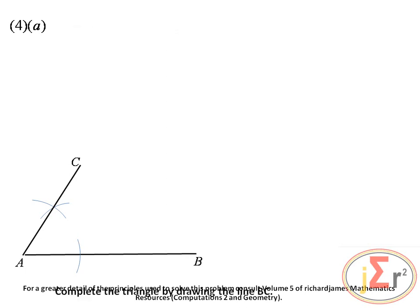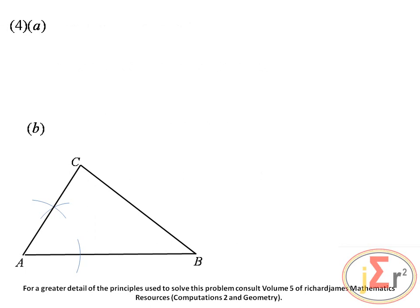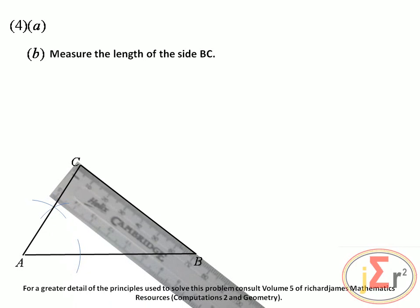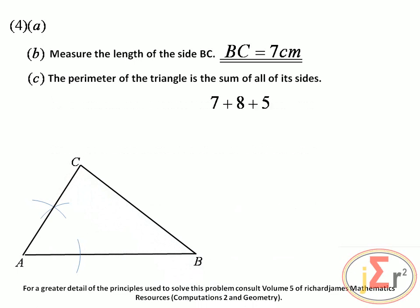Measure the length of side BC using the ruler. It goes from the 0 cm mark all the way to 70 mm, so we know it is 7 cm. The perimeter of the triangle is the sum of all its sides: 8 plus 5 plus 7 equals 20 cm.